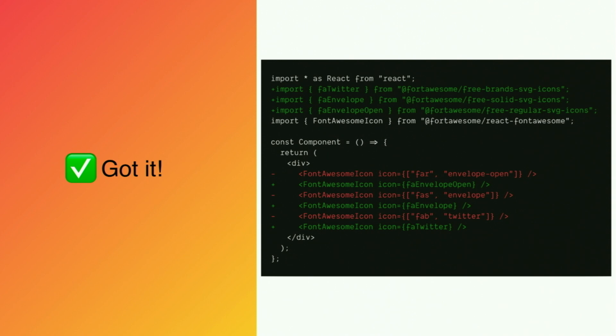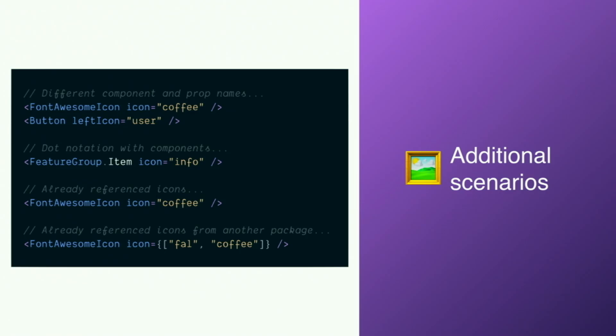For example, this first icon is from the 'far' package, so that icon is being imported from that package. But there are a number of other edge cases — for example, aliasing this component, wrapping it in other components, or using dot notation which produces a slightly different AST. We also have to handle multiple icons from the same package and avoid duplicate import statements, as well as avoid icon naming collisions when importing the same icon from different packages. The full version linked at the end handles all of these edge cases.